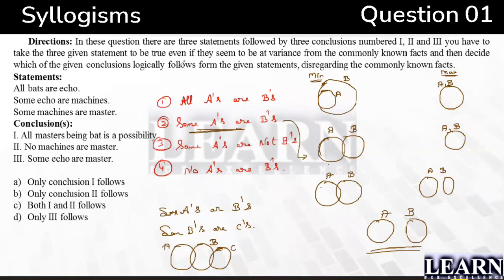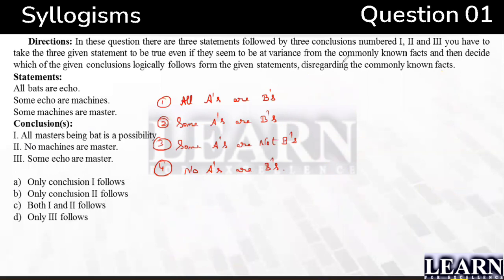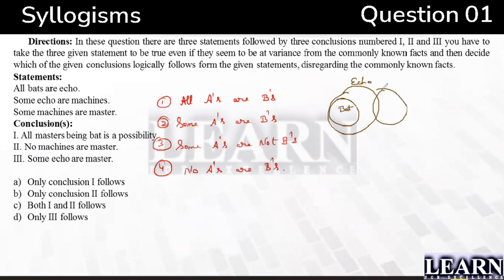Now applying this to the question. For 'all bats are echoes,' the minimum condition has bat inside echo. For 'some echoes are machines,' we are talking only about echo and machine, so we should not touch bat — some echoes are machines without connecting to bat.